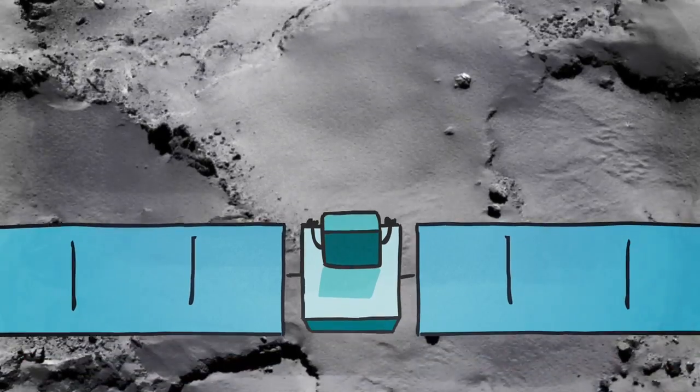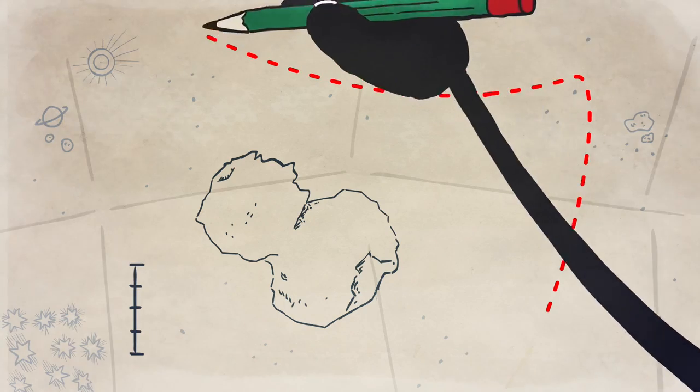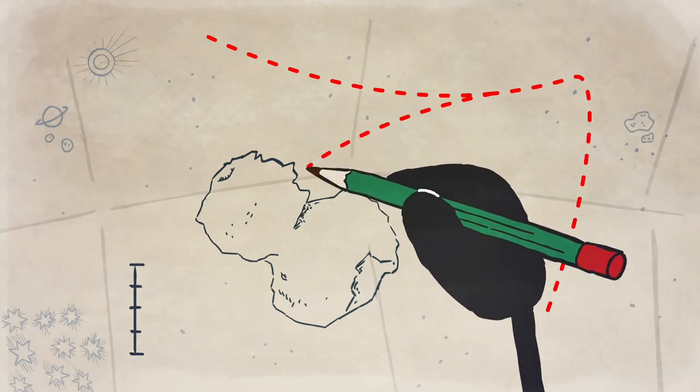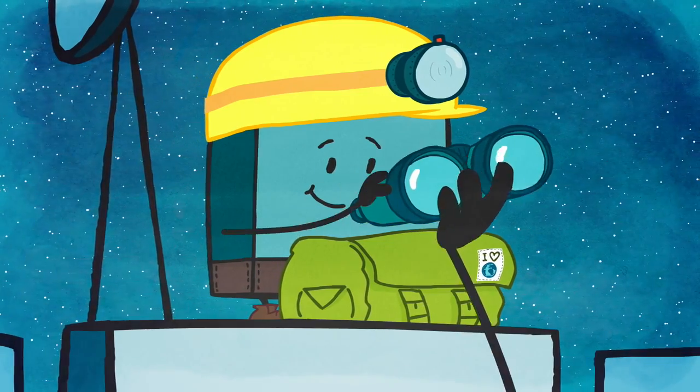Then Rosetta had to plan the exact route around the comet to make sure that Philae would land in the right place. Soon it was time for Philae to make the final preparations for his great adventure.